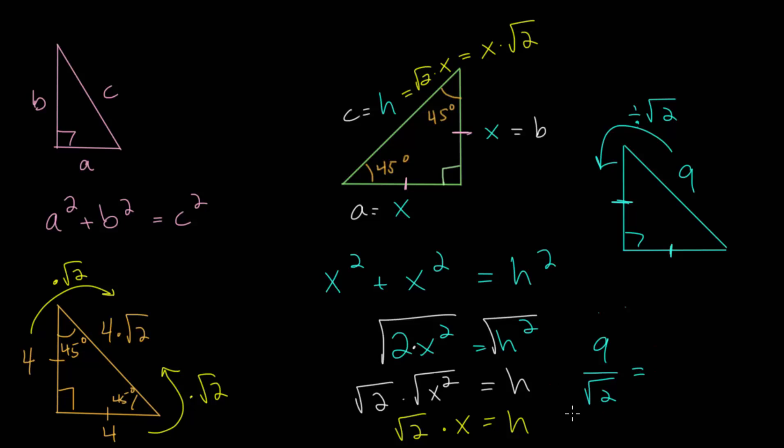And if we do 9 divided by the square root of 2, we would need to rationalize this denominator. So that means we want to keep the square roots out of the denominator. So to rationalize this, we're going to multiply top and bottom by the square root of 2. So we get 9 root 2 up top. And in the bottom, the square root of 2 times the square root of 2. If we combine these into one square root, we get the square root of 2 times 2, or the square root of 4.